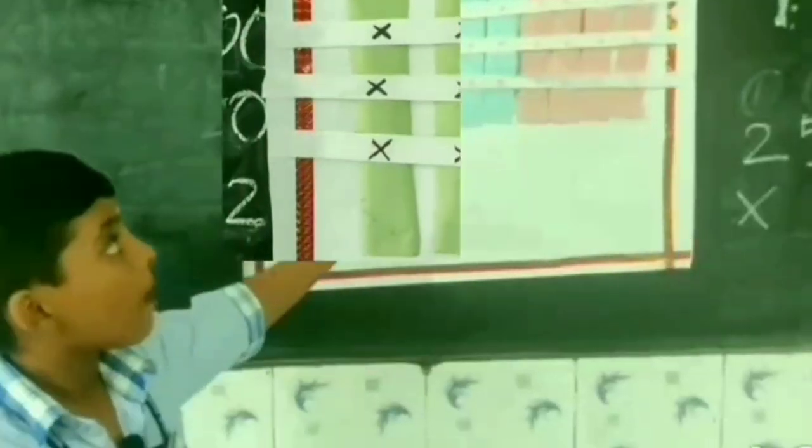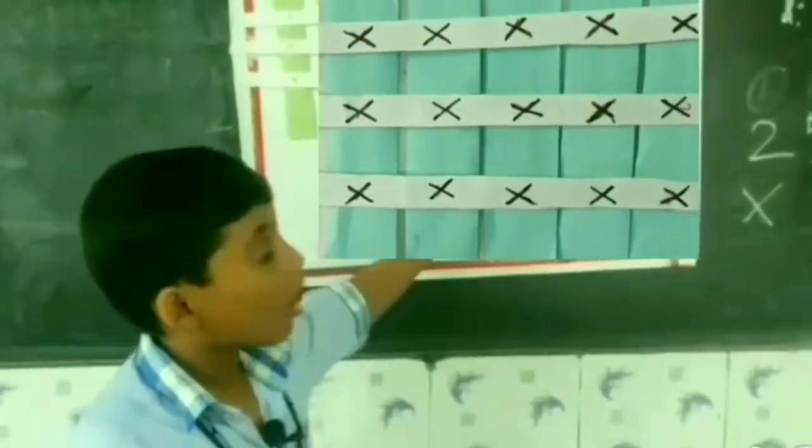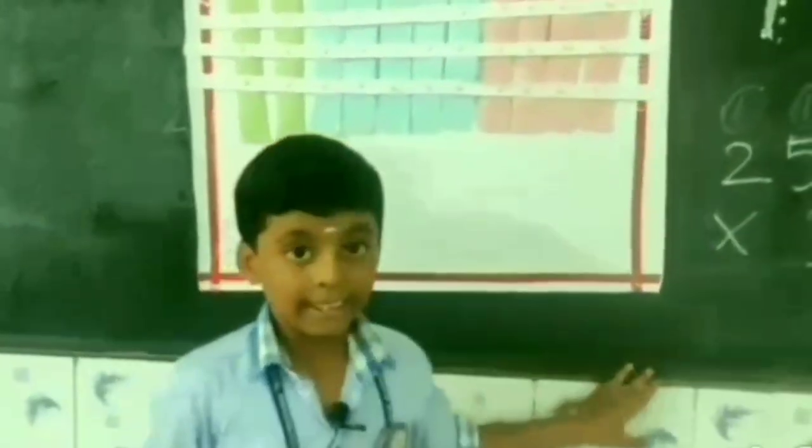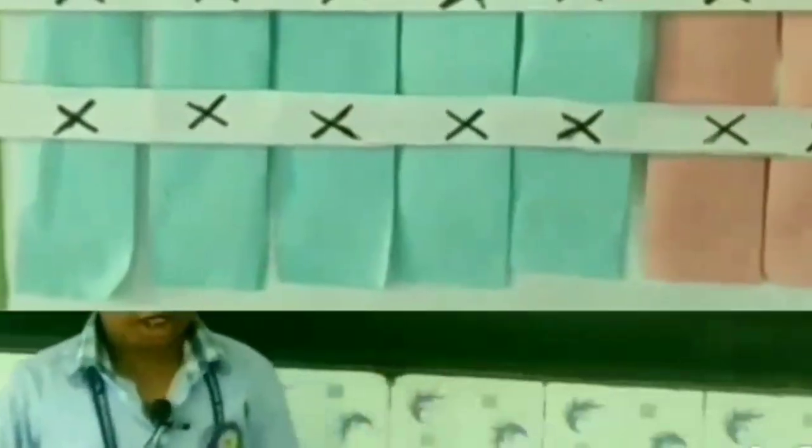I need 2 hundred strips, 5 ten strips, 4 one strips. Multiply 3 with it. Use 3 white strips and place them across it.